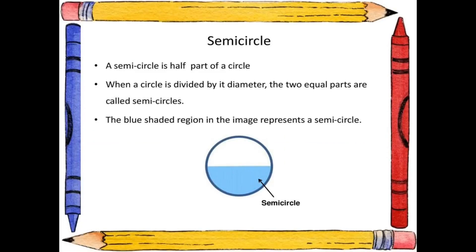The next topic is semicircle. A semicircle is half part of a circle. When a circle is divided by its diameter, the two equal parts are called semicircles. The blue shaded region in the image represents a semicircle.